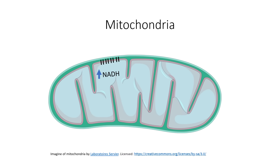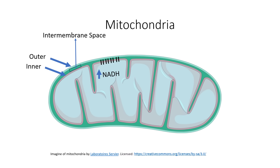Each mitochondria has an outer membrane and an inner membrane. Between the outer and inner membrane is what's known as the intermembrane space. Embedded into the inner membrane are four protein complexes, and those four protein complexes together are called the electron transport chain.